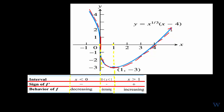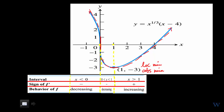The graph is unbounded from above, and we have a local min at (1, -3). We get y = -3 by plugging x = 1 into the original function — always plug the critical number into the original function, not the derivative. This local min is also the absolute minimum when looking at the big picture from negative infinity to infinity. There is no absolute maximum.